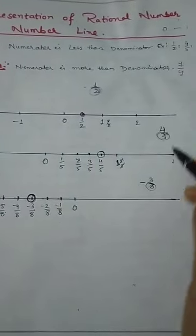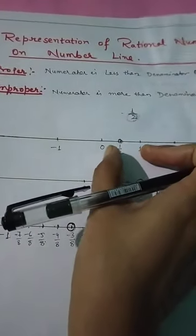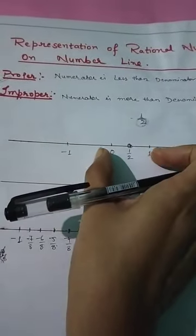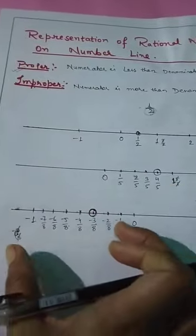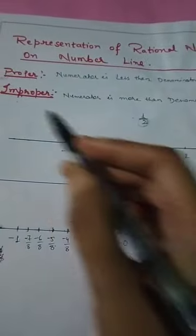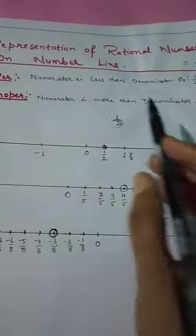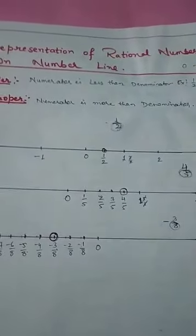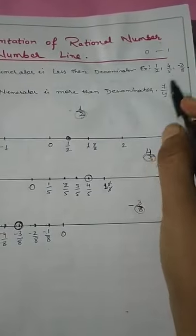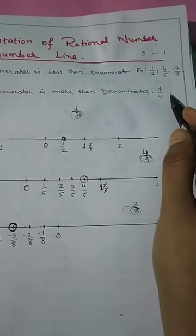So these were all proper rational numbers — all their values lie between 0 and 1. Now what about improper rational numbers? The numerator is more than the denominator. So we will first convert such improper rational numbers into mixed fractions.